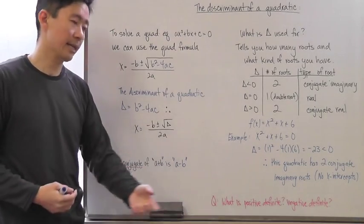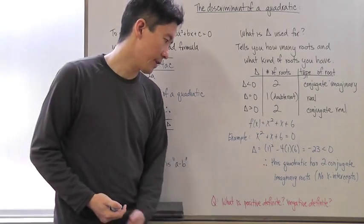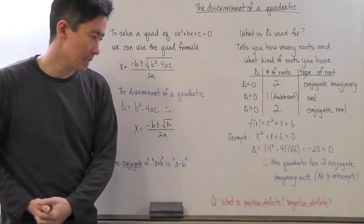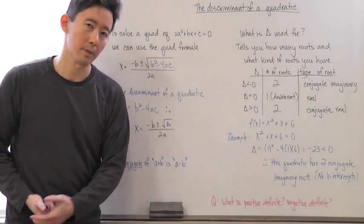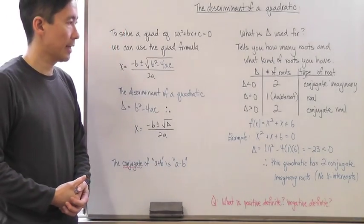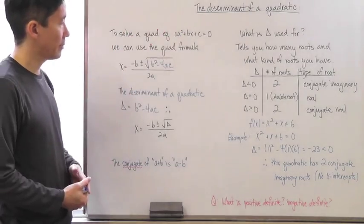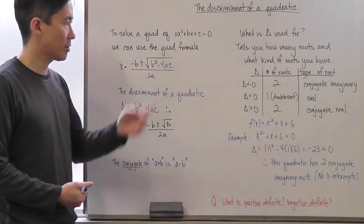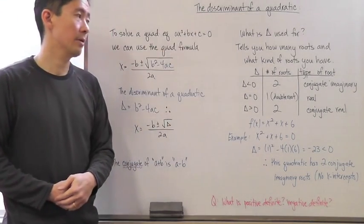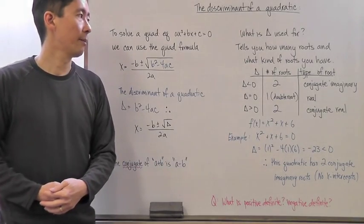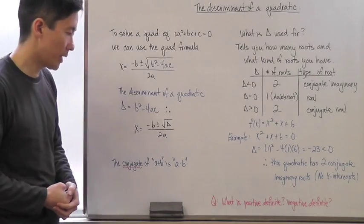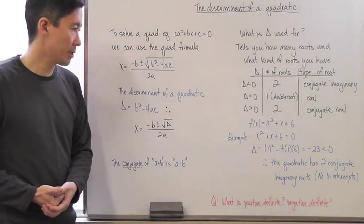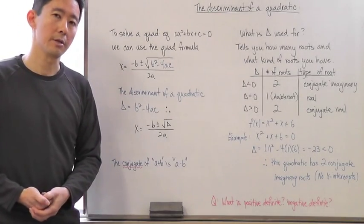We'll also discuss what it means for a quadratic to be positive definite or negative definite during class. To wrap things up: the discriminant is the part under the radical sign in the quadratic formula, and based on its value it tells you how many roots and what kind of roots you have. We'll look at more questions during class — hopefully we can answer any queries you have at that time.